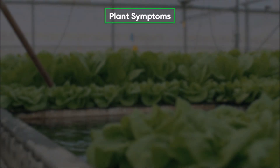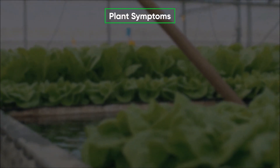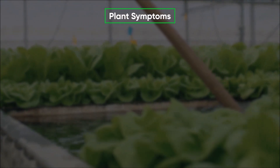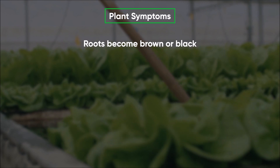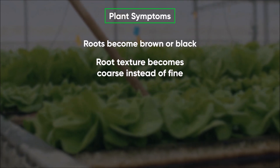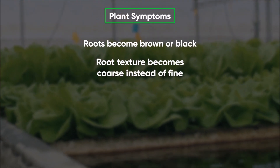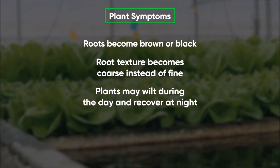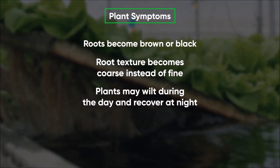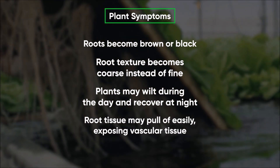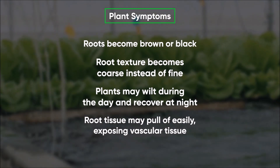Plant symptoms. Plants with the pythium pathogen experience the following: roots become brown or black; root texture becomes coarse instead of fine; plants may wilt during the day and recover at night; root tissue may pull off easily, exposing vascular tissue.